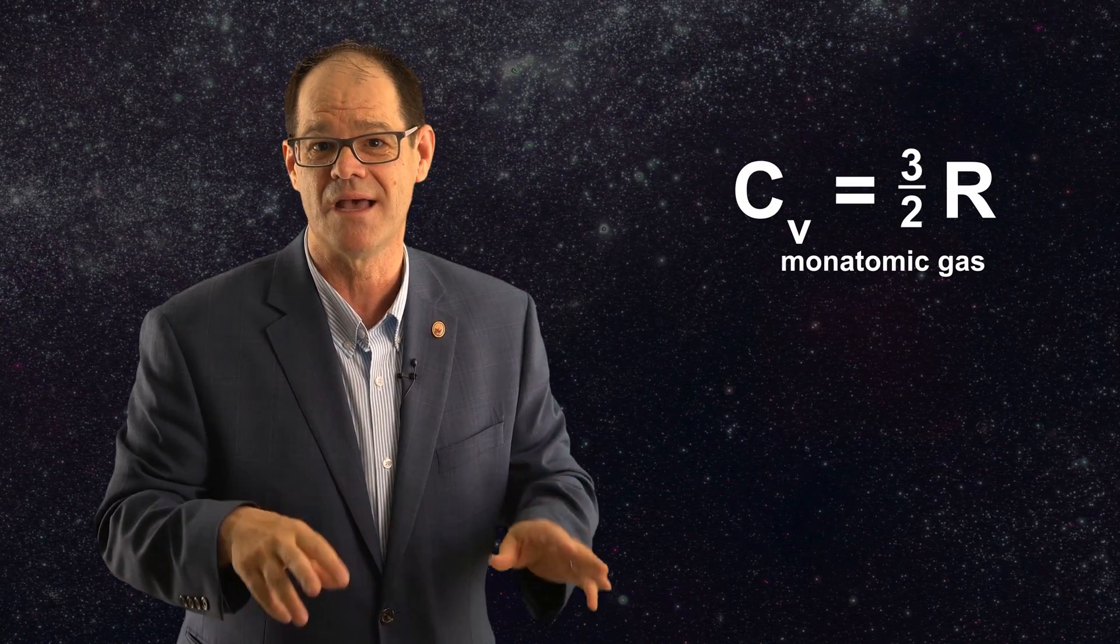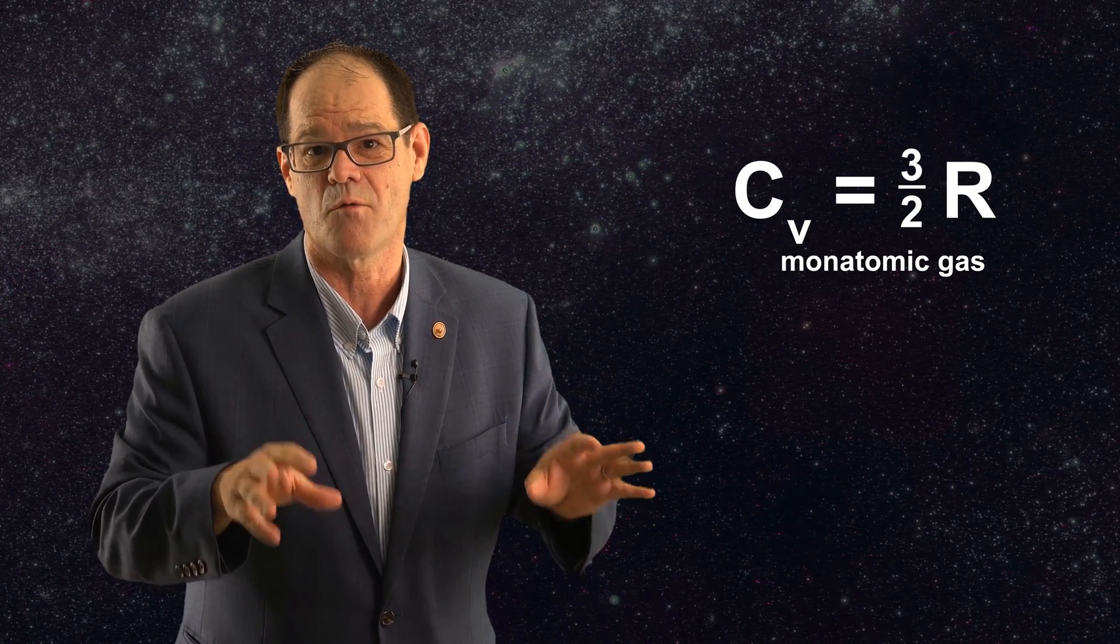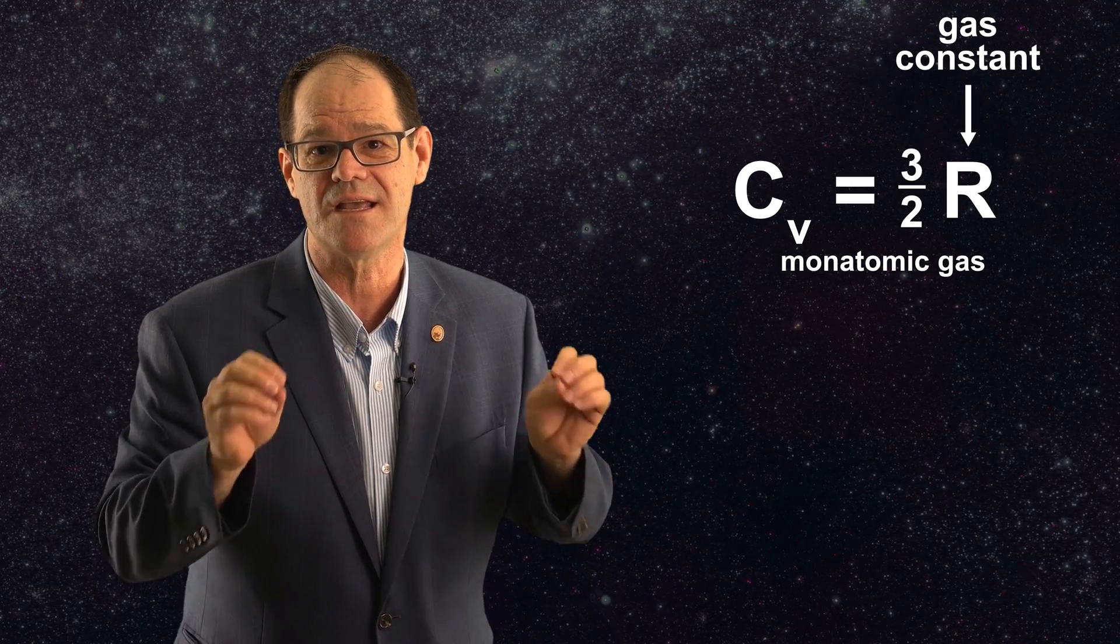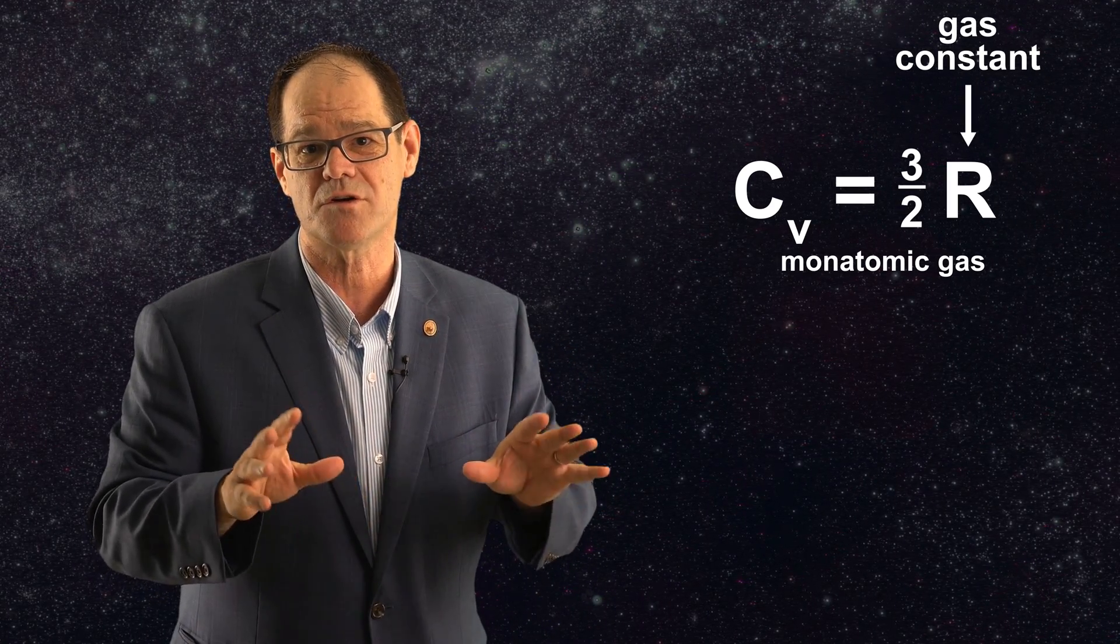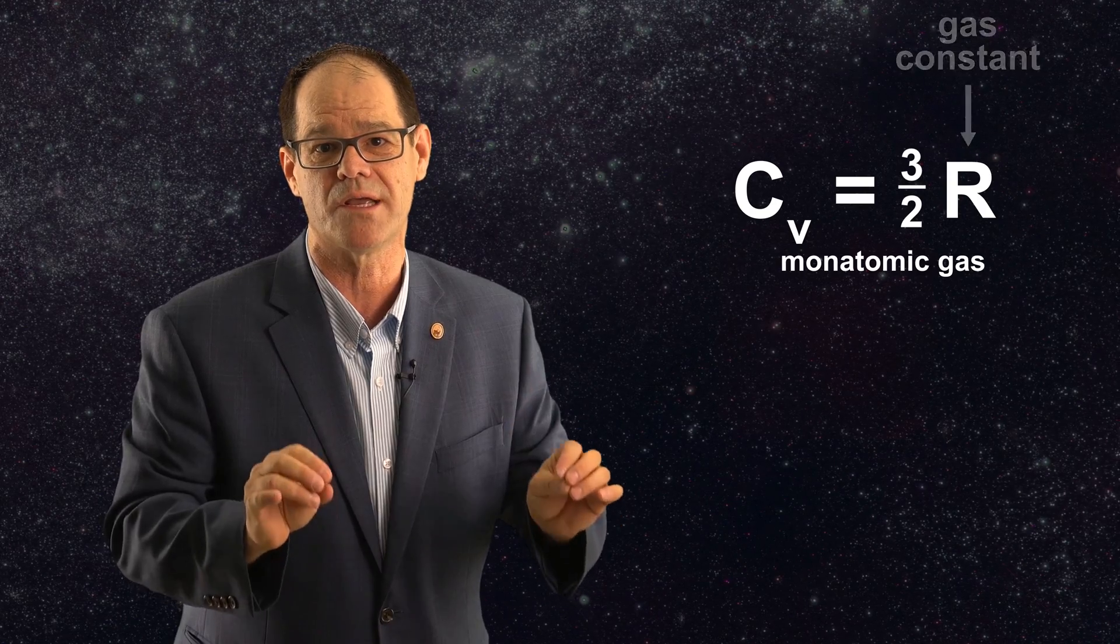The specific heat capacity at high temperatures in an ideal monoatomic gas at constant volume is equal to three halves r where r is equal to the constant in the ideal gas law. This corresponds to about three calories per mole per degree.